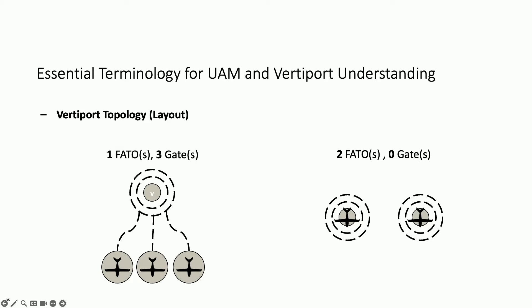Not all vertiports will have gates and FATOs, and that leads to the concept of vertiport topology. Some vertiports will have FATO only — for example, the vertiport on the right has two FATOs and no gates, so all operations happen at the FATO. The topology on the left we refer to as 1-3: one FATO and three gates. In this case, the aircraft lands at the FATO and then taxis to the gate, where we do our operations.